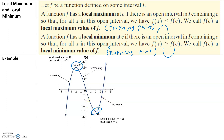So we would say that the local maximum is 16 — the value of the point is 16 — and it occurs at x equals negative 2. The local minimum is negative 16, and it occurs at x equals positive 2.